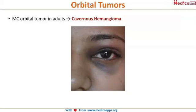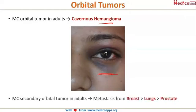Another common orbital tumor seen in adults is cavernous hemangioma, which is the commonest orbital tumor in adults. However, secondaries can come from the breast, lungs, or prostate. The most common malignancy causing orbital secondaries is breast malignancy, followed by lungs and prostate.